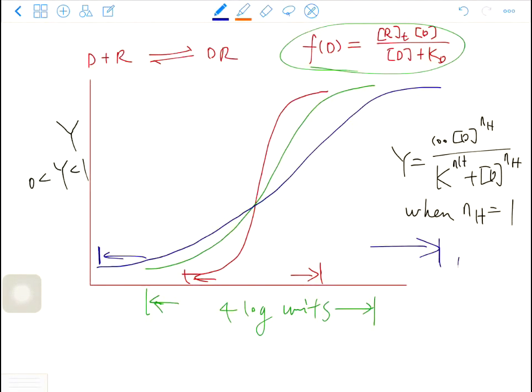When you have Hill coefficient less than 1, you have the blue curve. And for the red curve, Hill coefficient is bigger than 1.